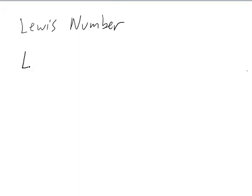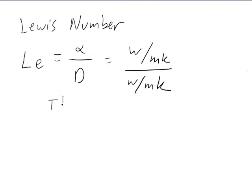So if we want to calculate the Lewis number, we can do alpha over D, which the units are watts per meter Kelvin over watts per meter Kelvin, so we are unitless. This is our thermal diffusivity over mass diffusivity. That's where the ratio comes from.